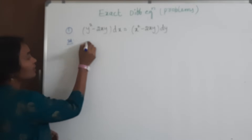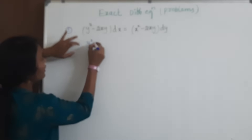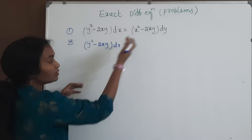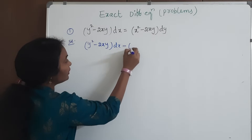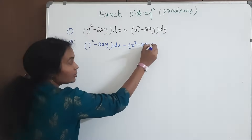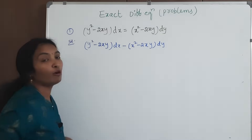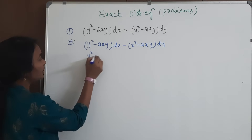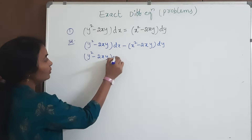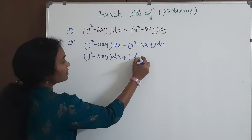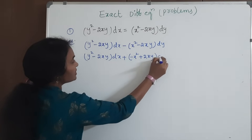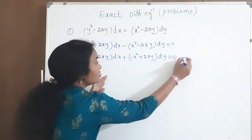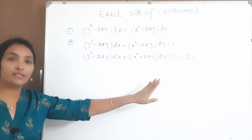What is the given equation? We have y² minus 2xy here. I need to take this N term over, so this will become negative of x² minus 2xy dy. But what is our required form? M dx plus N dy. For that, I need to multiply by minus one, so this will become negative x² and this will become positive. Now this looks like M dx plus N dy form.